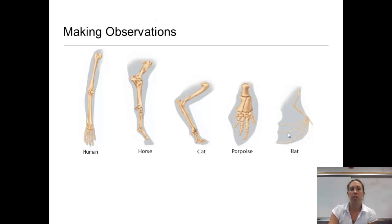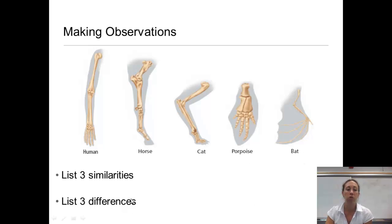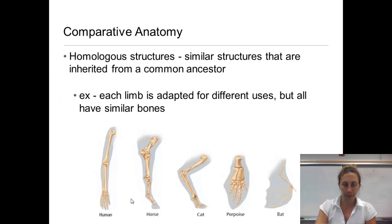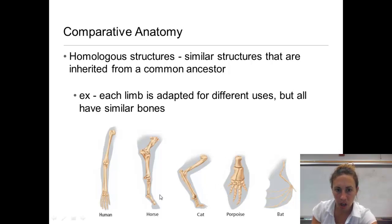Let's make some observations. Take a moment and list three similarities and three differences between a human arm, a horse leg, a cat leg, a porpoise fin, and a bat wing. In comparative anatomy, homologous structures have similar structures inherited from a common ancestor. Each limb is adapted for different uses but all have similar bones — they all share a similar wrist bone and finger-like structures.